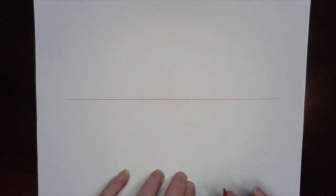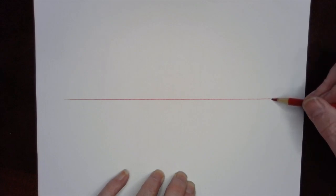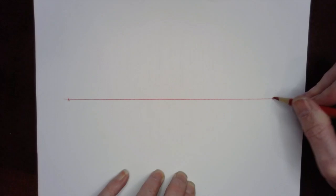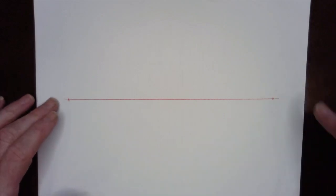And on the horizontal line, I'm going to put two points, what are called vanishing points, right here and right here. And we're going to build boxes that disappear to these two points.